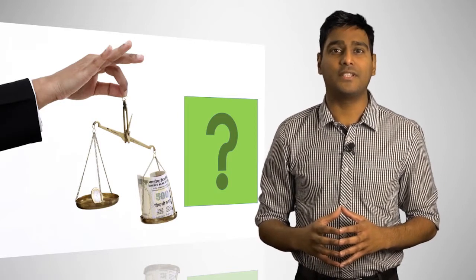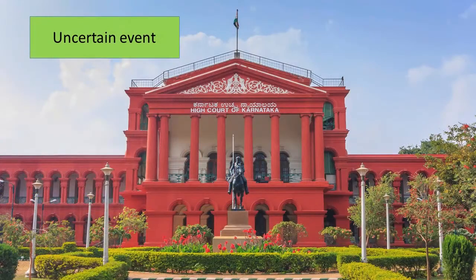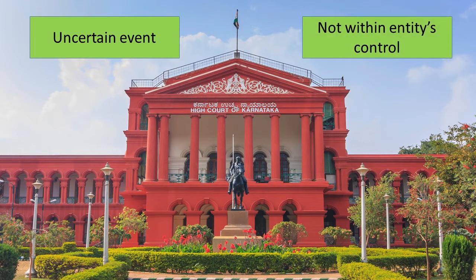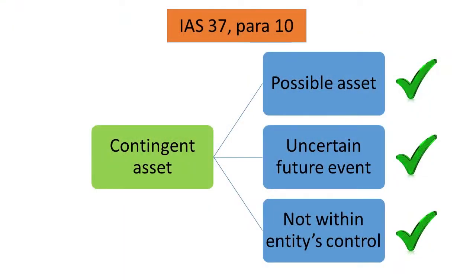The existence of this asset would depend on the court's ruling in favour of Raja Hindustani, so this would be considered an uncertain future event. Further, the ruling is to be made by the courts and is not within the control of Raja Hindustani. Thus, the compensation would meet the definition of a contingent asset in terms of IAS 37.